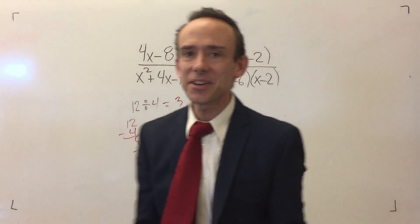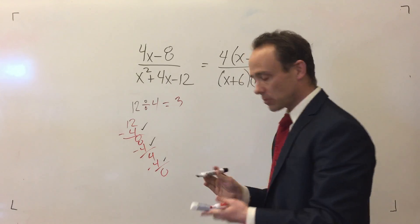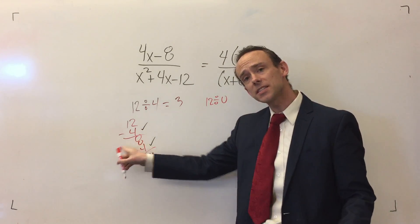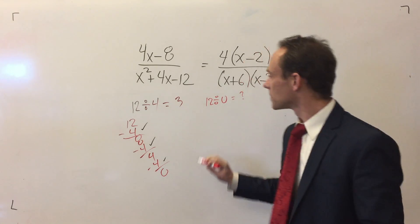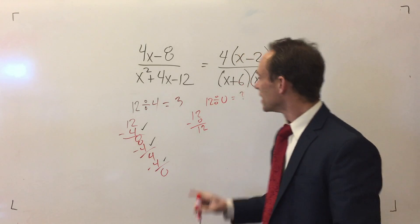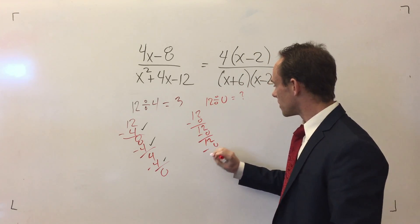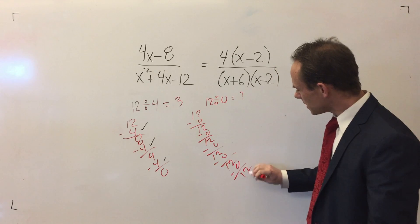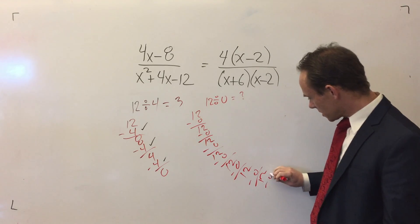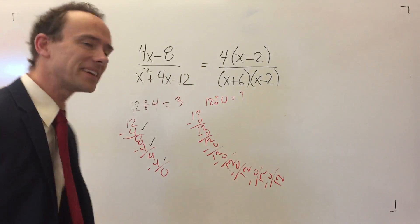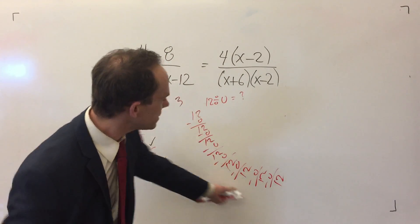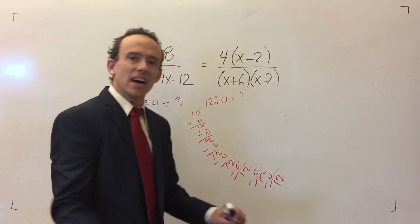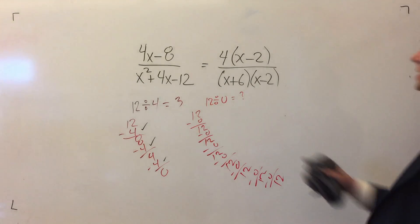Now let's divide by zero and see what happens. We'll do 12 divided by zero. I want to show you that it's undefined. Let's take this definition. I've got to start at 12, I'm going to take away zero. I need to keep taking away zero until I get to zero. 12 minus zero is 12, minus zero is 12, minus zero is 12. I'm going to be here forever because if I keep subtracting zero, I'm never going to get to zero. It's undefined. It's not infinity. It's not defined. It doesn't have an answer. We can't divide by zero.